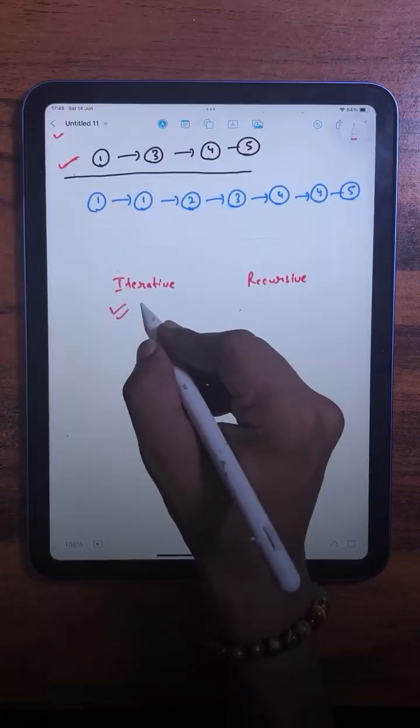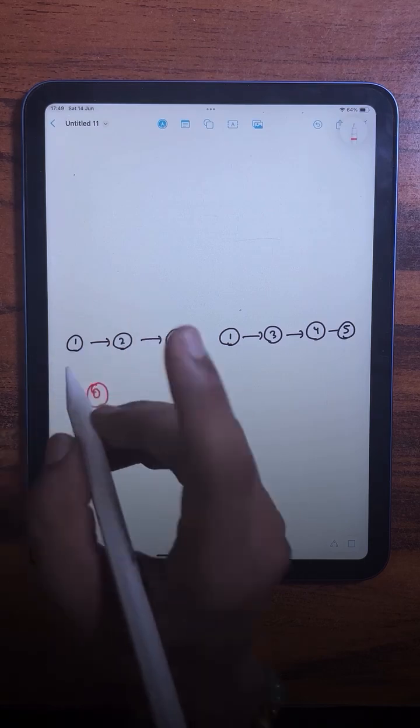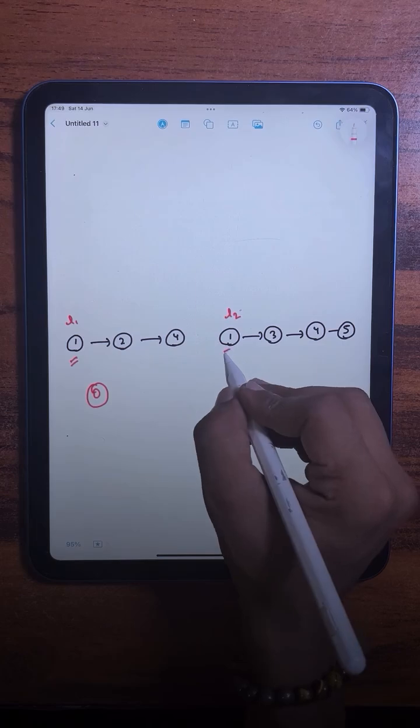Now let's see how we are going to solve this question using the iterative approach. What we are going to do is take a dummy node as a placeholder and we will take two pointers, one for each list. One pointer will be here and the other pointer will be here.